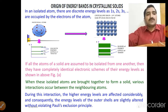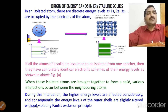Pauli's exclusion principle states that no two electrons can have the same four quantum numbers — principal, orbital, magnetic, and spin quantum numbers. If two electrons share the same principal, orbital, and magnetic quantum numbers, then they must differ in spin quantum number.